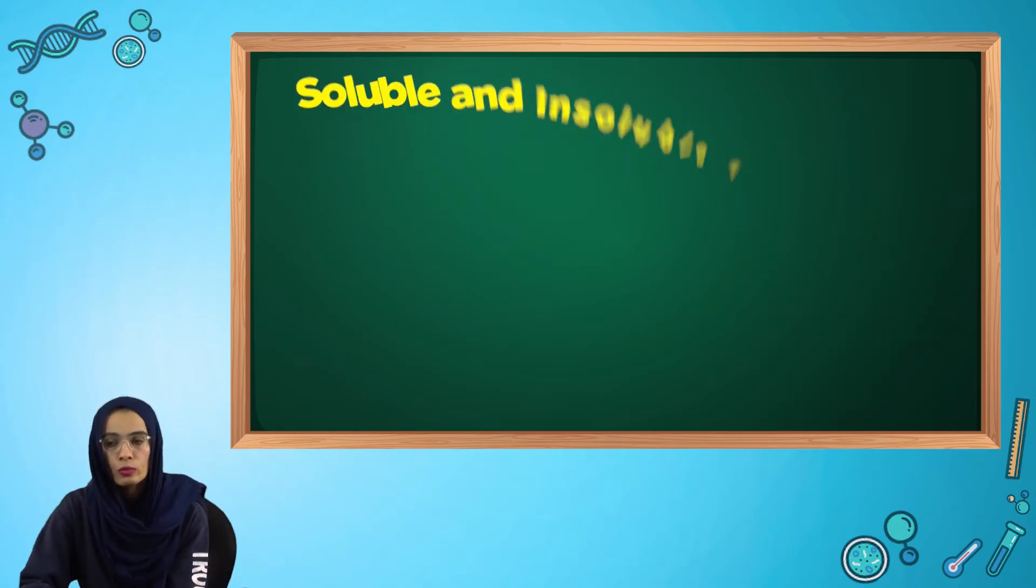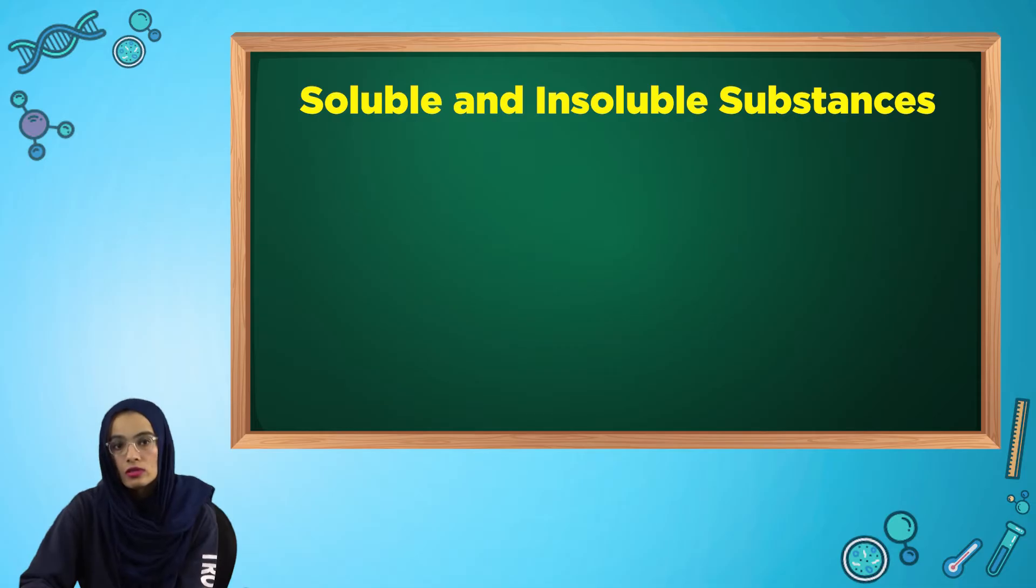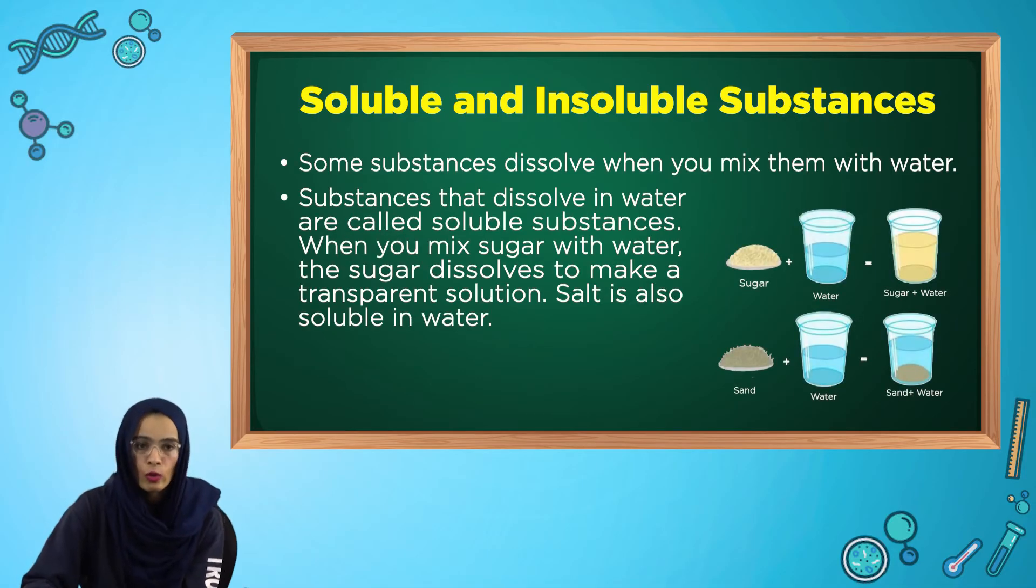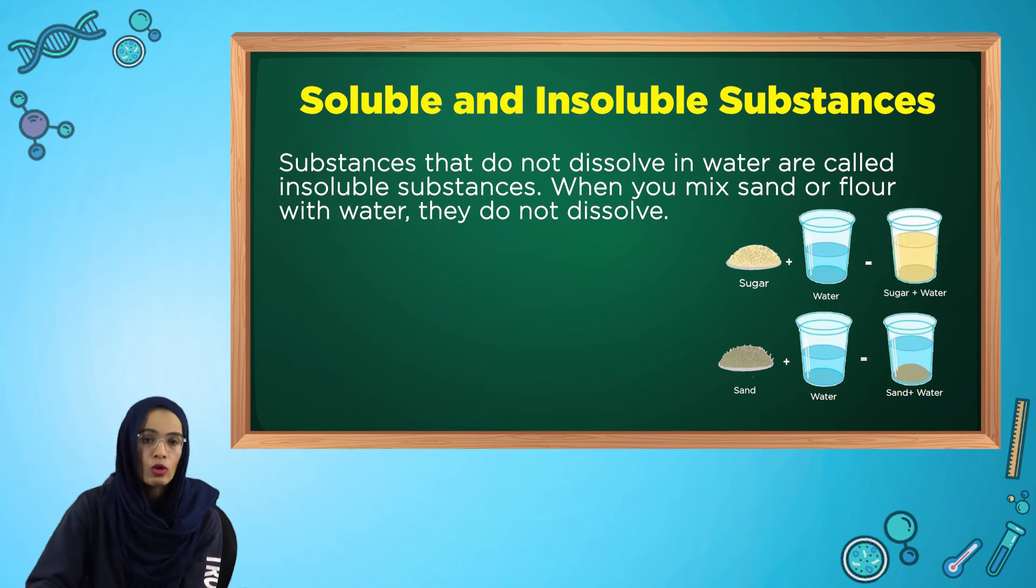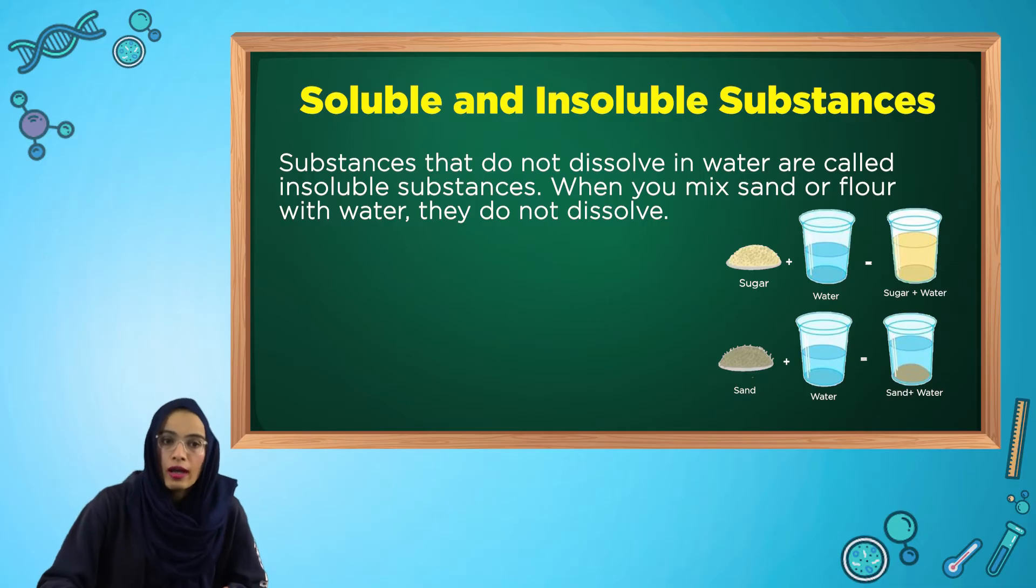Now let's understand what are soluble and insoluble substances. Some substances dissolve when we mix them with let's say water. Substances that dissolve in water are called soluble substances. When you mix sand or flour with water, they do not dissolve. So they are insoluble.